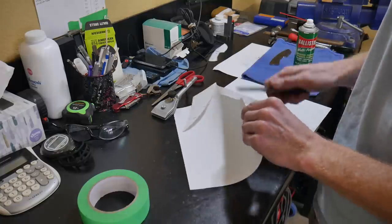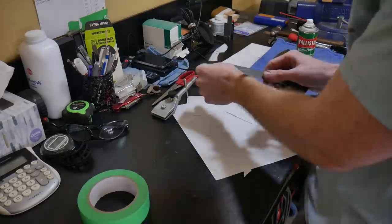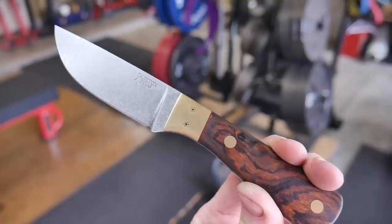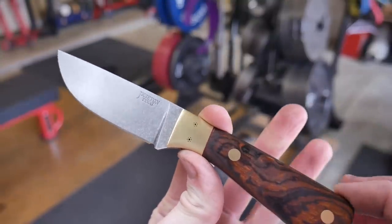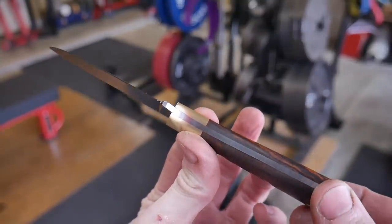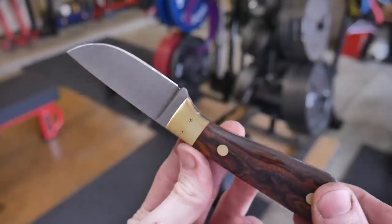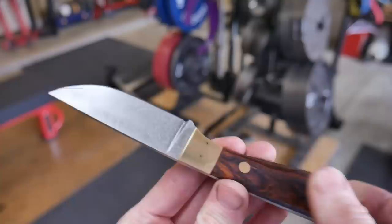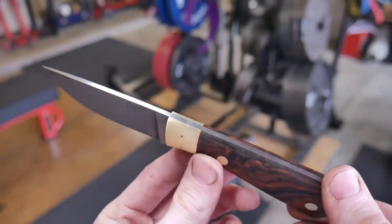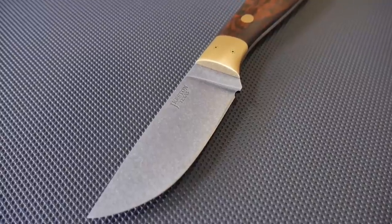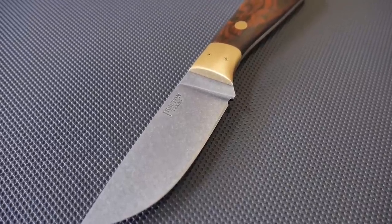So yeah, this is how my first bolstered full tang knife turned out. All in all, I'm happy with it. It took me some time comparatively to what I normally do, but that's part of the learning process here. I think there would probably be a more efficient way to finish this brass bolster so that it's nice and shiny, or shinier than it is here. In this case it's almost a brushed finish.